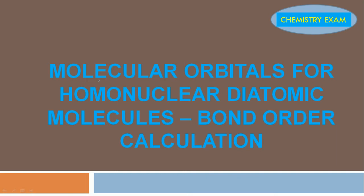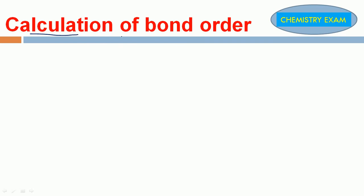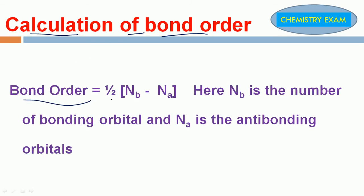Welcome to all. Today, we are going to discuss about molecular orbitals for homonuclear diatomic molecules, and how to calculate bond order for these molecules. First, calculation of bond order. What is the formula of this calculation? Bond order is equal to 1/2 (NB minus NA).